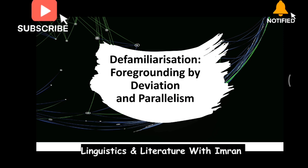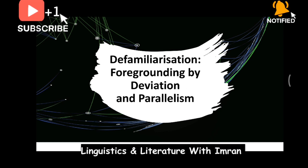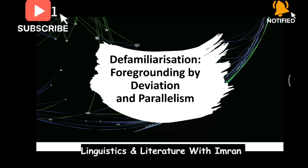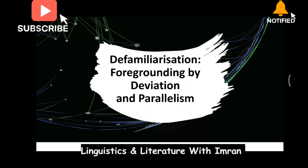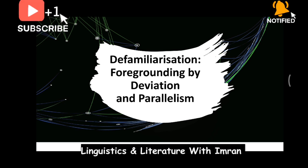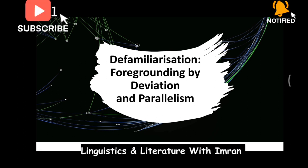Now you might ask: what is deviation? Deviation means you have expected norms — in writing, in painting — you have rules and regulations. When you break those rules and regulations, when you deviate from them, that is deviation. For example, in Urdu we say 'main cricket khelta hoon' — 'main' is the subject, 'cricket' is the object, and 'khel raha hoon' is the verb. Similarly in English: 'I play cricket' — first subject, then verb, then object. These are established rules. Poets break these rules — they can use the object first, the verb first, or a preposition first.